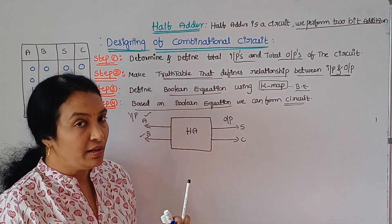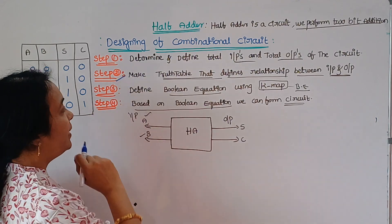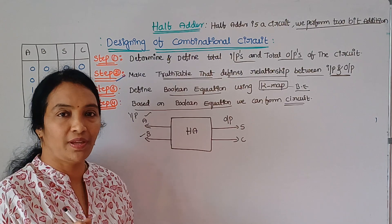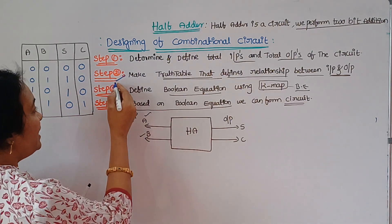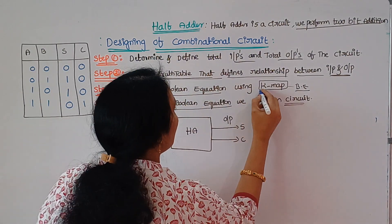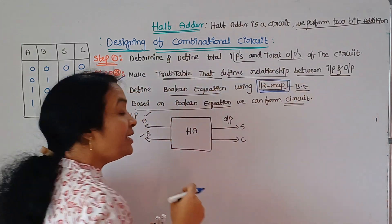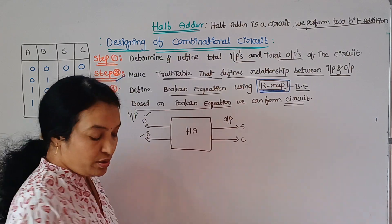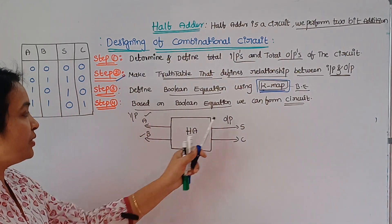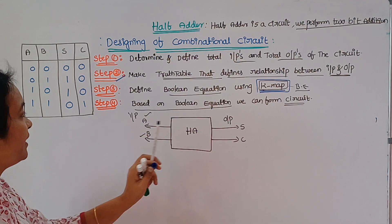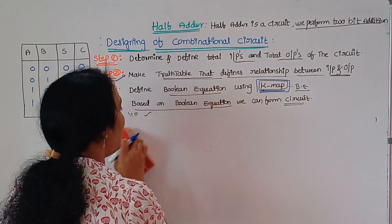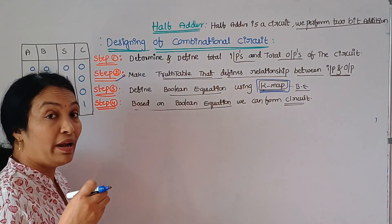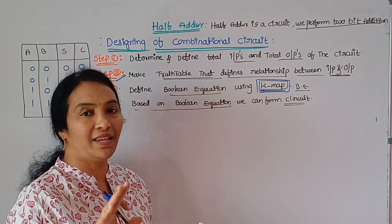The second step is to derive the Boolean equation. Based on the truth table, we draw the K-map. We have two inputs and two outputs — the sum and the carry. You have to draw the K-map for sum and carry separately.